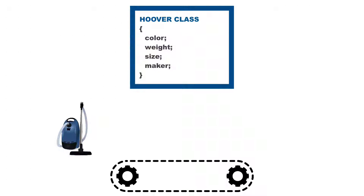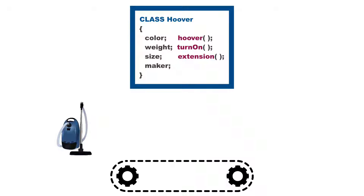All classes do is they make a template. For example, if I had hoovers, my hoovers generally have the same criteria that define them — the same sort of description: the color, weight, size, maker. That's the same sort of criteria. And they also have the same verbs as well. You can obviously start hoovering, switch it on, pull out the extension. Every hoover I want to produce does the same thing — it has the same nouns and the same verbs.